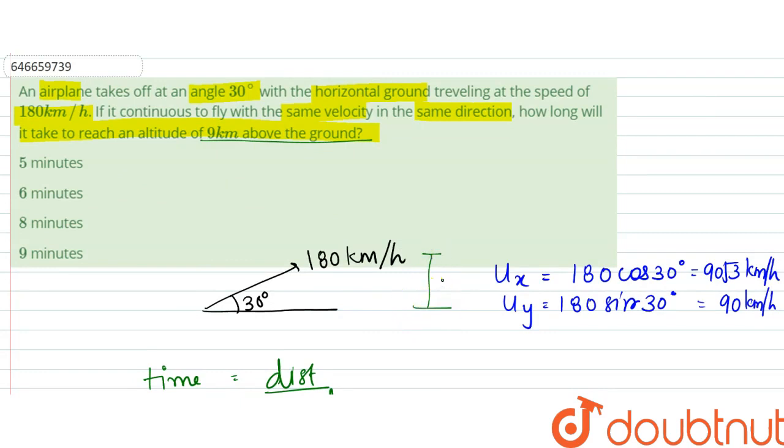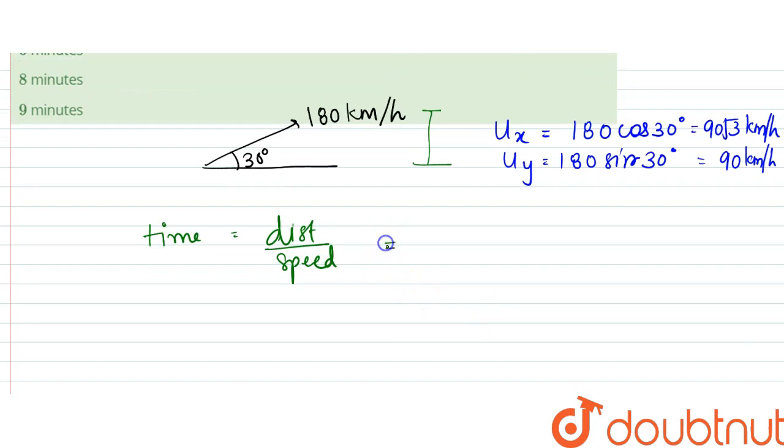So from here, what we can see is that the distance traveled is 9 kilometers divided by the speed is 90 kilometers per hour. So it would take 1 by 10 hours, that is equal to 0.1 hour.